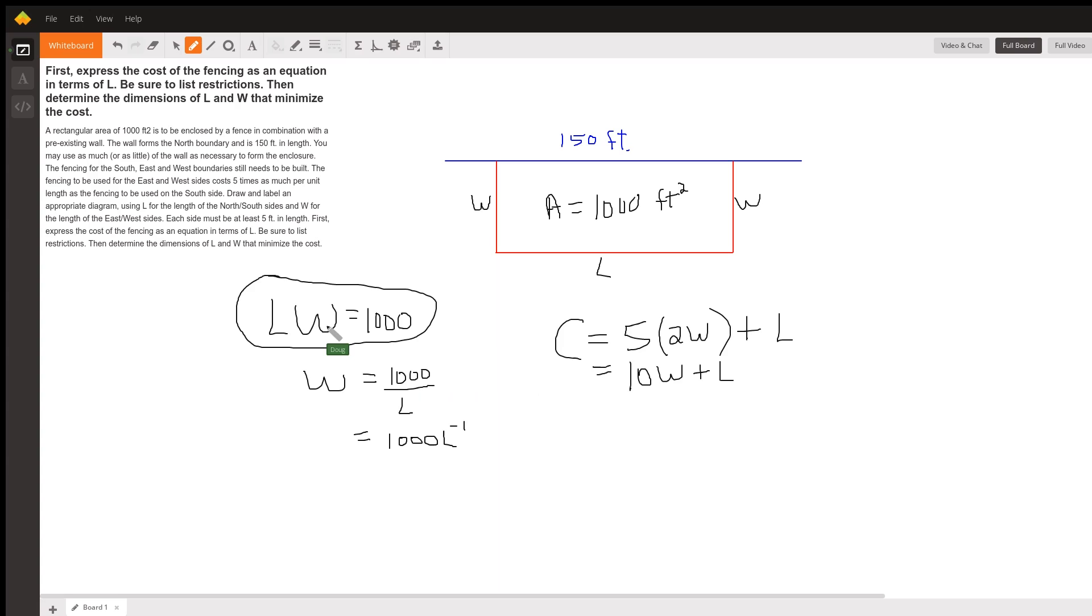So if L is about, because it's 10W over L or 1,000 L to the minus one.